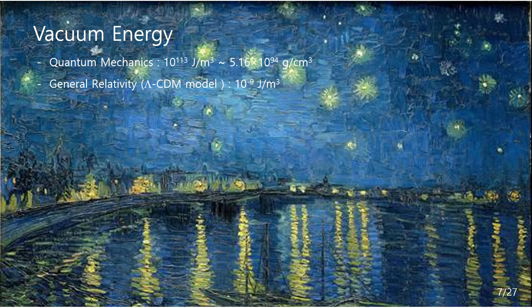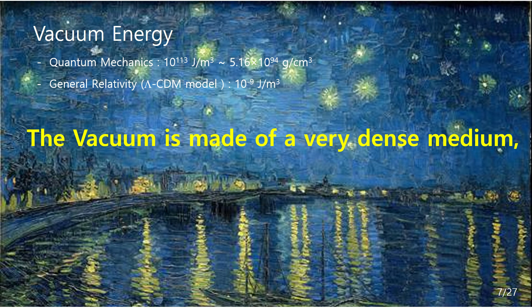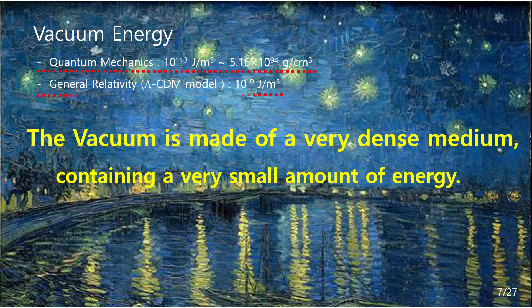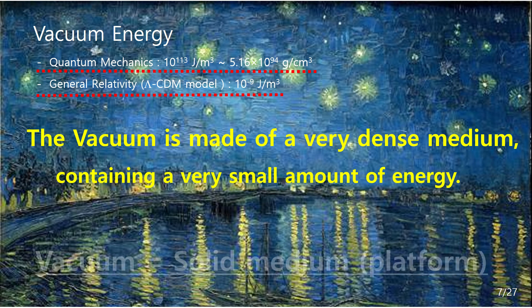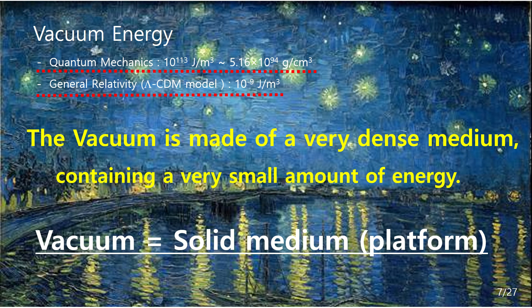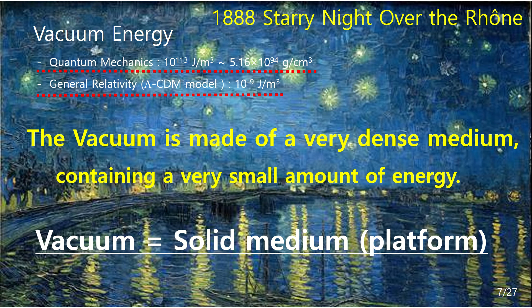There is a huge difference in the vacuum energy between the two predictions. How can we solve this paradox? The vacuum is made of a very hard medium, like the prediction of quantum mechanics, but contains a very small amount of energy, like the prediction of general relativity — and the paradox will go away. In other words, the vacuum is a solid medium and a platform for energy and matter. This is our paradigm of vacuum. This vacuum is illustrated in the picture of Van Gogh's Starry Night on the Long River in 1888 — stars shine in the solid sky like on an LED screen. I think Van Gogh knew the secret of the vacuum.